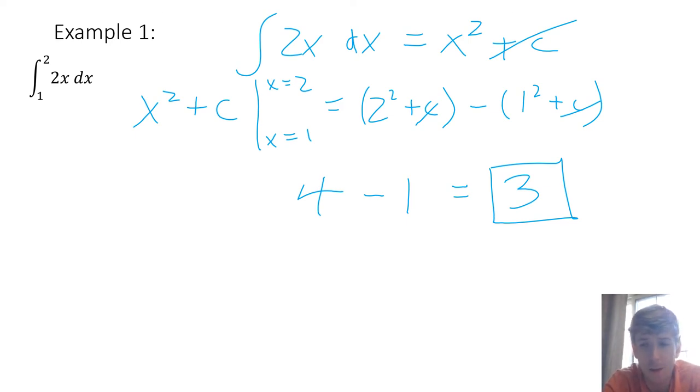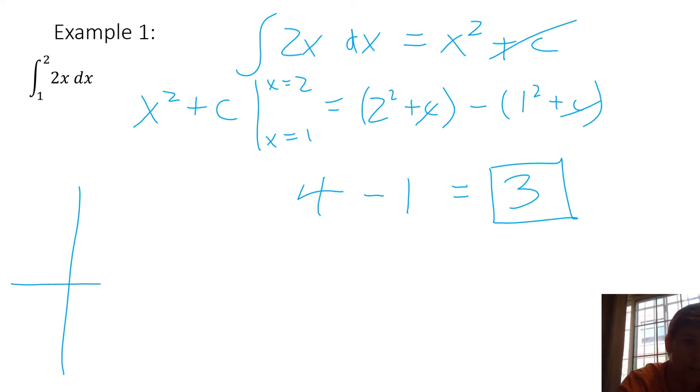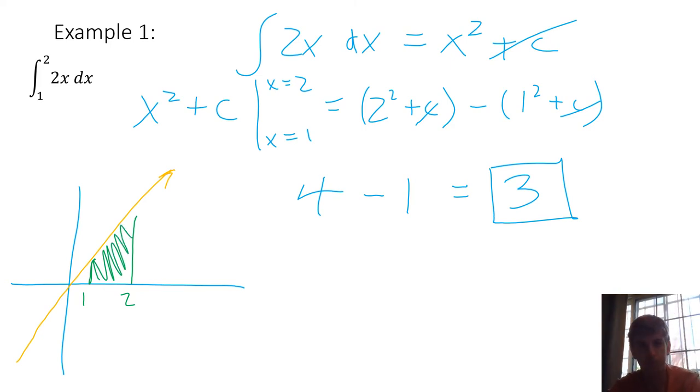For indefinite integrals, you definitely still need the plus C, but for definite we're just evaluating and getting this number. 2 squared is 4 minus 1 squared, which is 1, so we end up with 3. That's the answer. Just thinking back to what I was saying about that net area, taking the function 2x, which is just a line through the origin slope of 2, and thinking about that region from 1 to 2, this area shaded in green is 3. That's what that means.